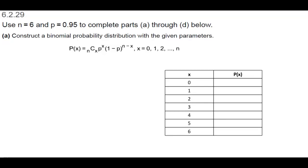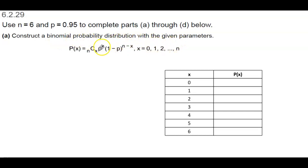Section 6.2.29. We're going to use n equal to 6 and p equal to 0.95 to complete parts a through d below. We're going to construct a binomial probability distribution with the given parameters, using the following formula.